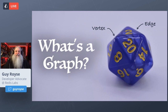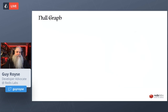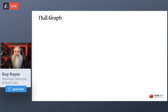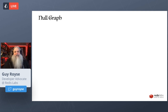The simplest graph is the null graph — a graph with no nodes and no edges. It's kind of boring, just formless and void. Some mathematicians will say that a null graph is not a real graph, but I feel like that's splitting hairs. It's not a very useful graph.